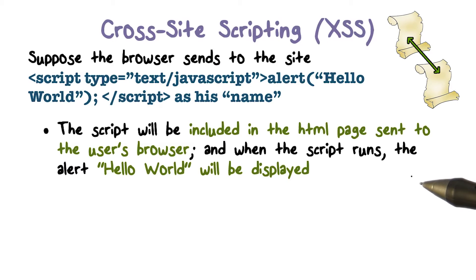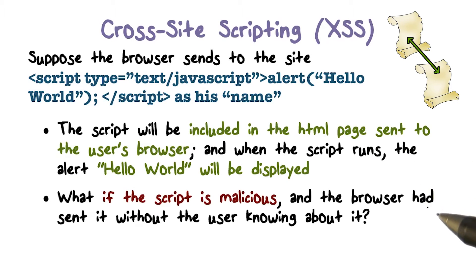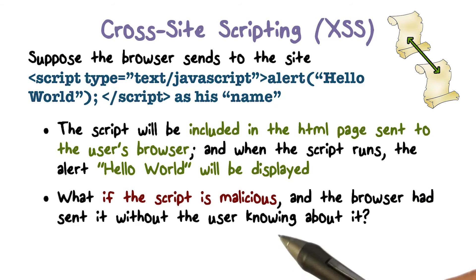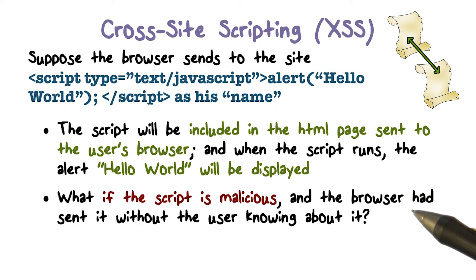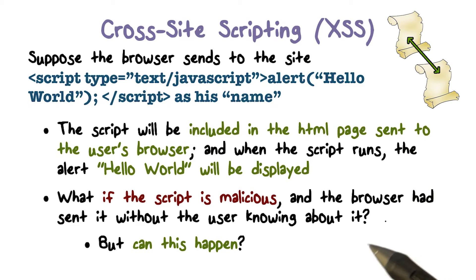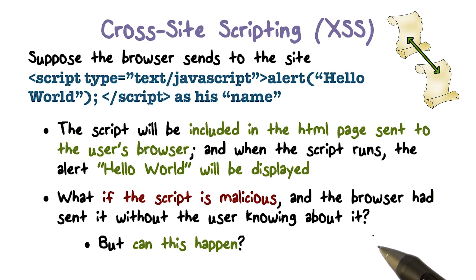Now this is a benign case. But what if the script is malicious? When the browser gets the HTML page from the web server, it will just execute the script. So if the script is malicious, then the malicious script will be executed by the browser. But why would the browser send a malicious script to the website without the user knowing about it? How can this happen?